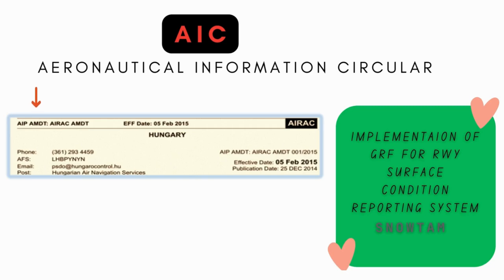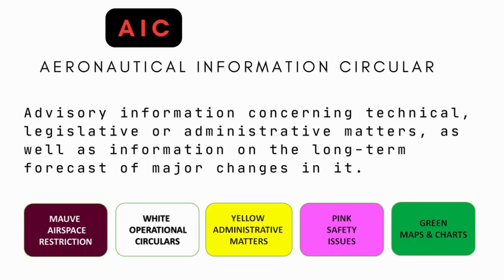A notice containing information that does not qualify for the origination of a NOTAM or for inclusion in the AIP, but relates to flight safety, air navigation, or technical, administrative, or legislative matters, is called an Aeronautical Information Circular, or AIC.